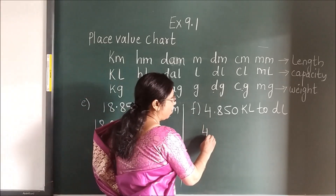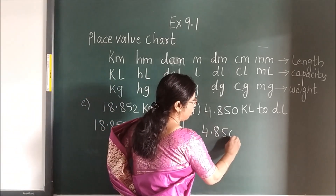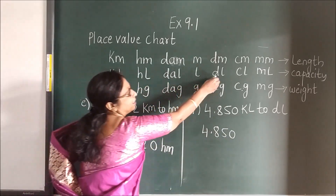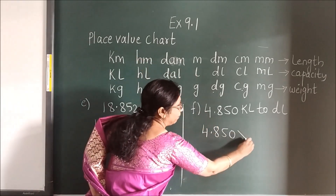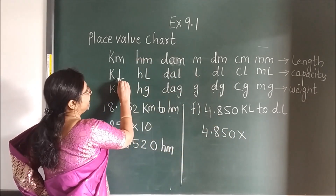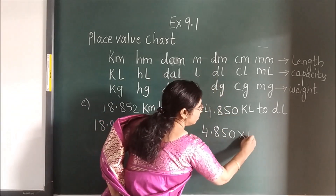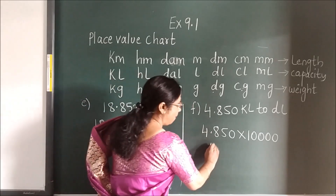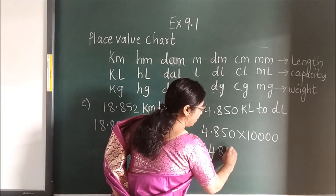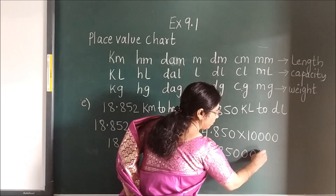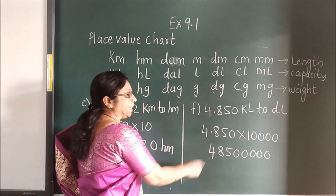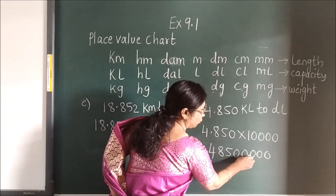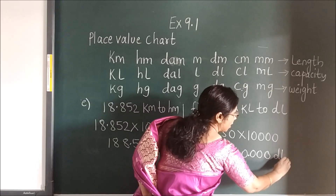Here — 4.850. Now KM to DL. Where is KM? And where is DL? Right side you are moving. Multiply. Now how many times? 1, 2, 3, 4. So 4 zeros. Now carry out the multiplication, add the zeros. Now place the point — after the point how many digits? 1, 2, 3. So after 3 digits you are going to place the point. And this will be your decimal conversion.